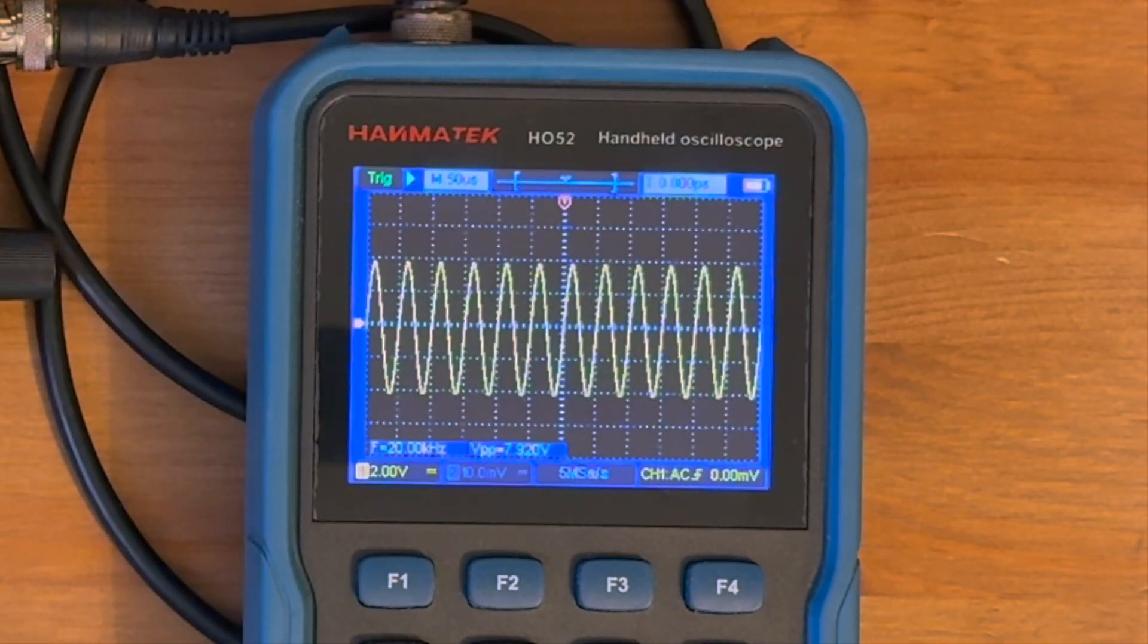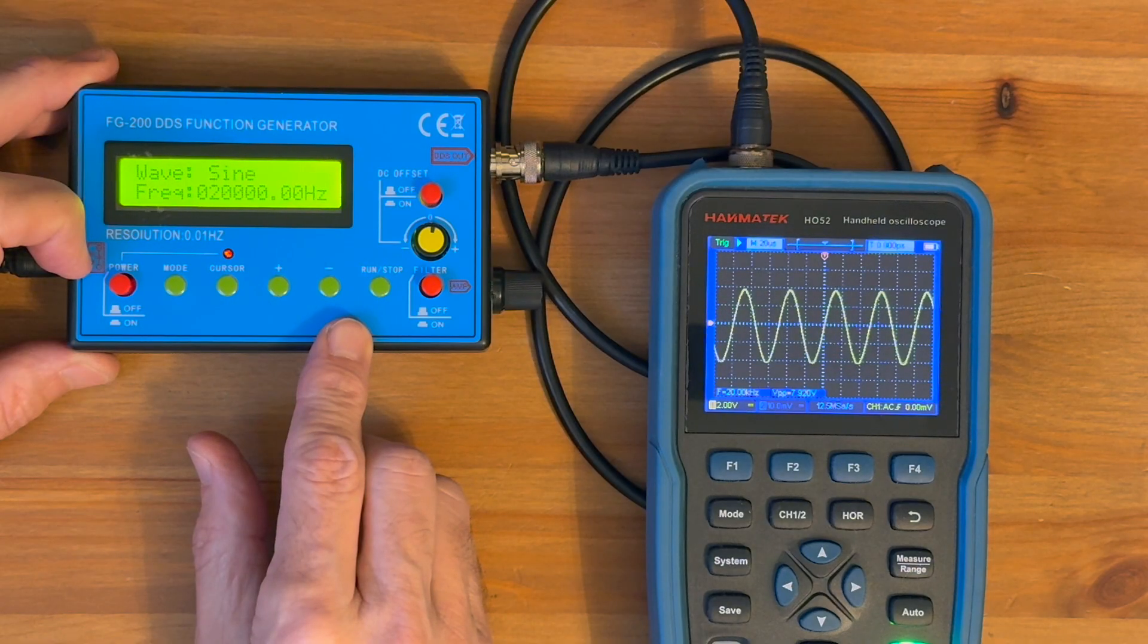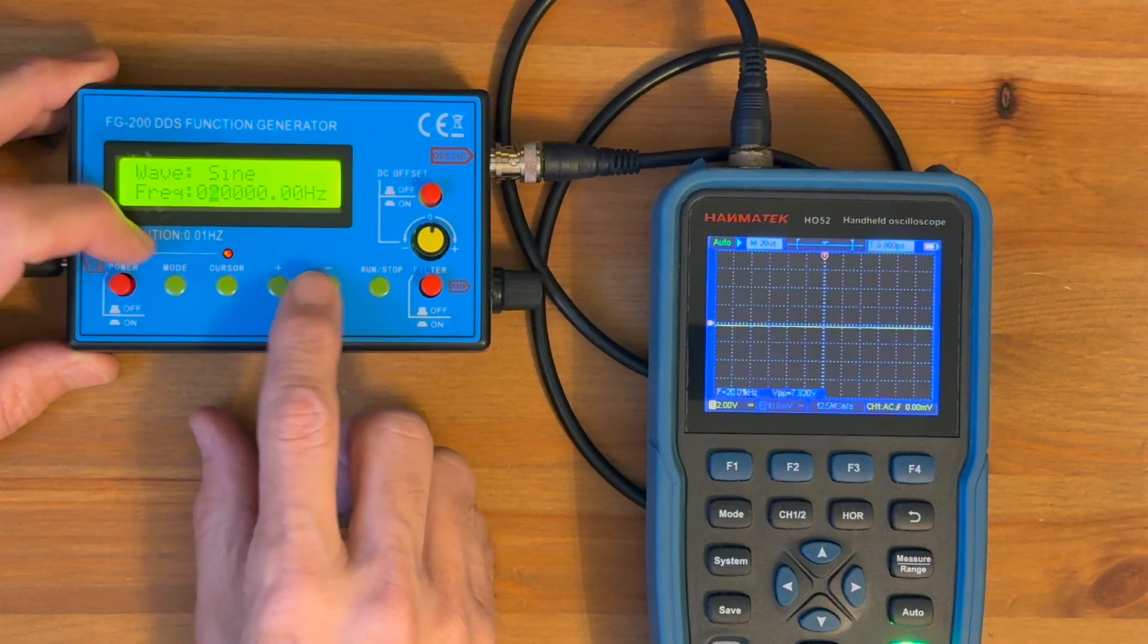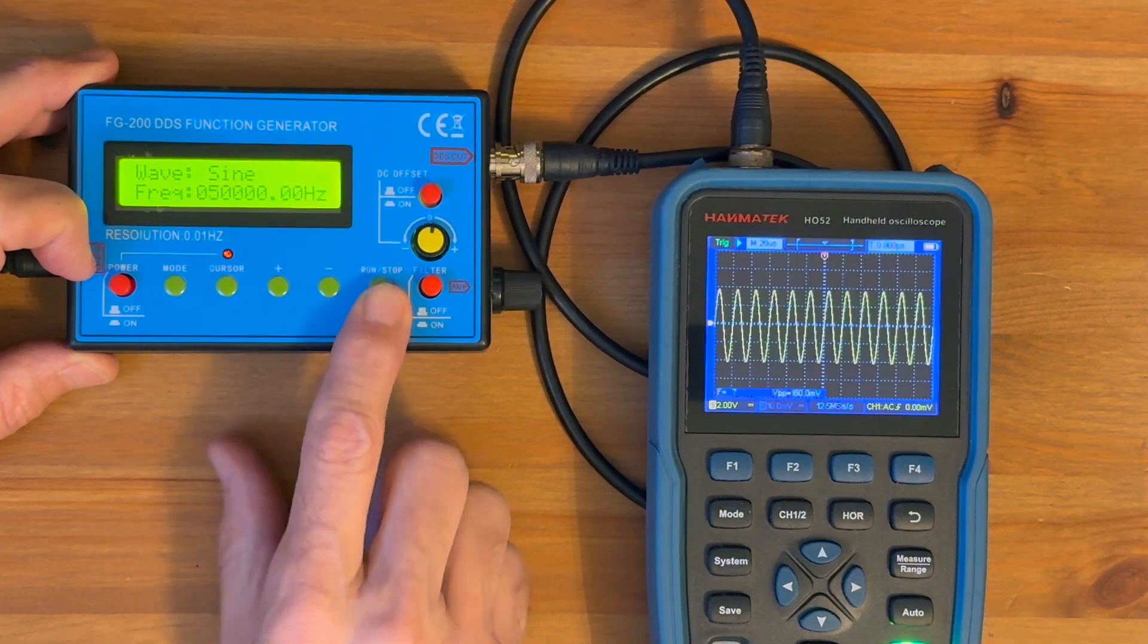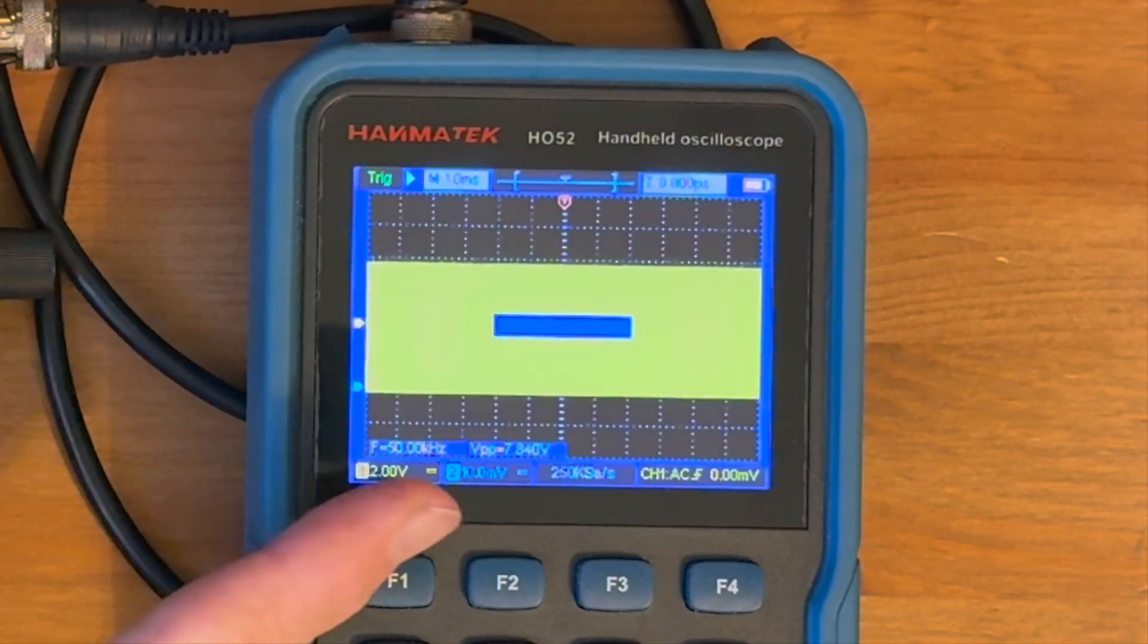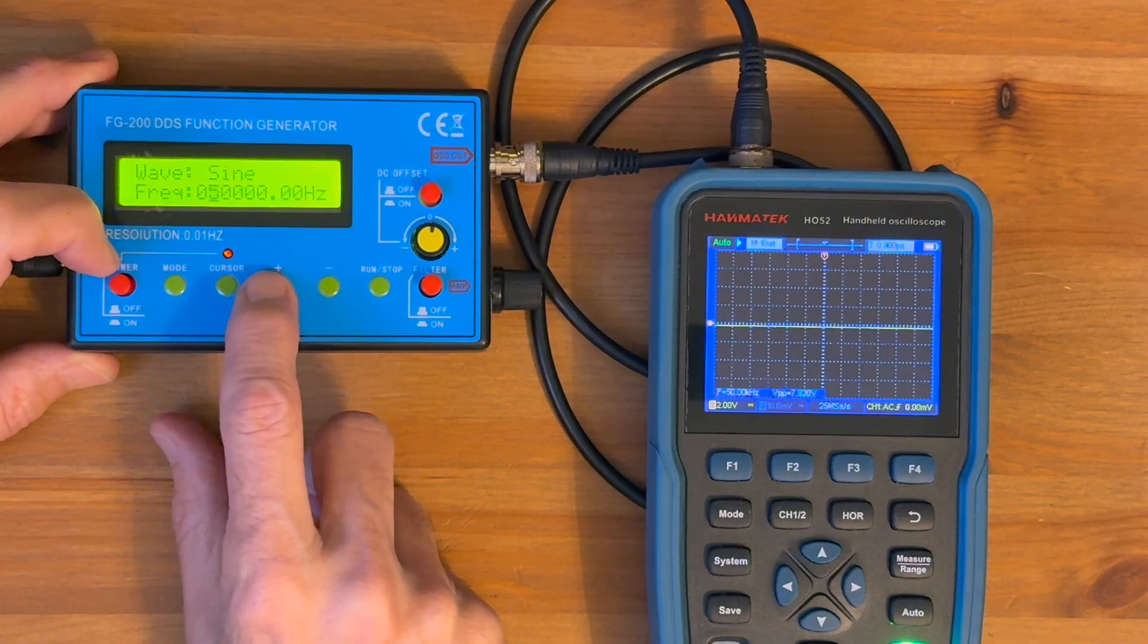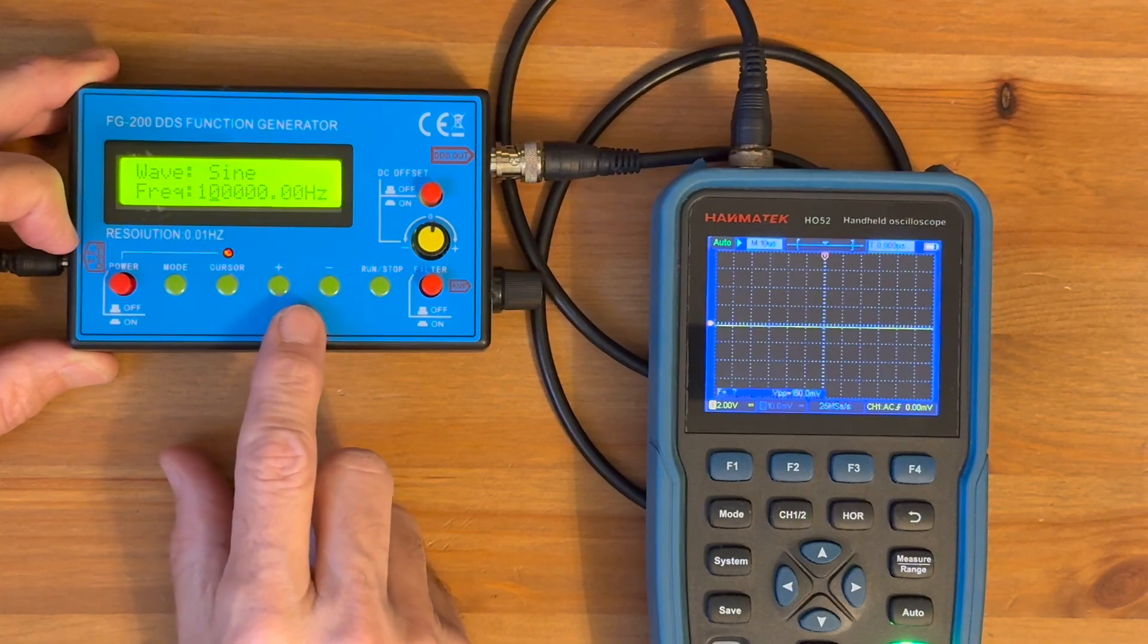Well, maybe a little less, 7.92. But basically, that's pretty flat at that point. And if we decide to go all the way up to, let's just say, 50, we're going to get a little bit of attenuation, you can see here, 7.84 volts. But it's at 50 kilohertz. And let's go to 100 kilohertz.